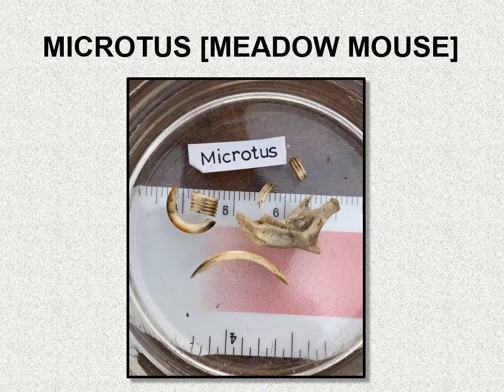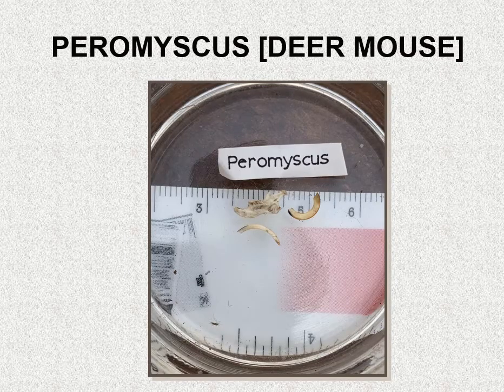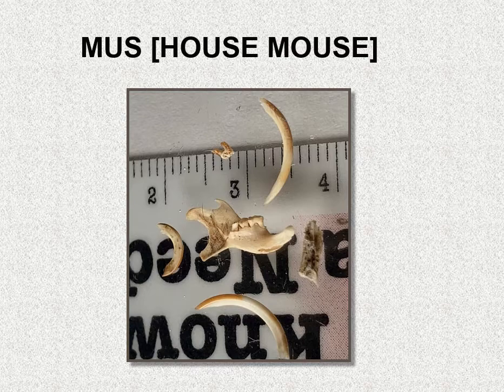Deer mice are another undisturbed species — a small rodent. House mice are associated with urban structures and disturbed areas. They have their own special teeth structures to be able to identify them. You can see the difference between the lower and upper teeth sizes here.